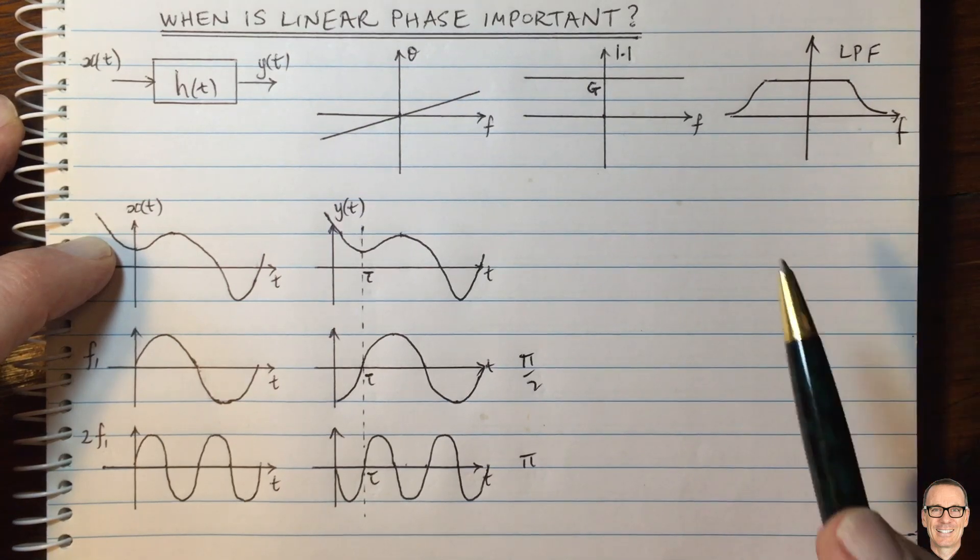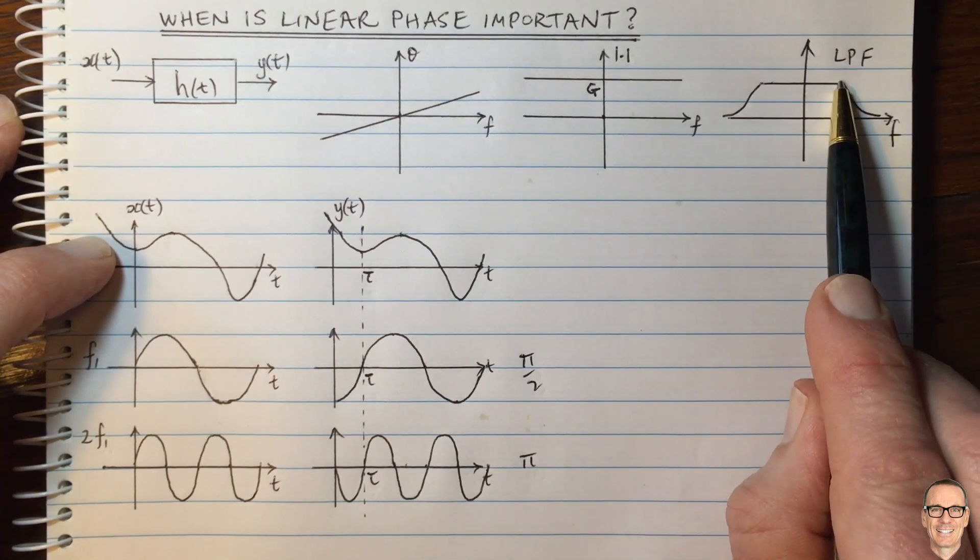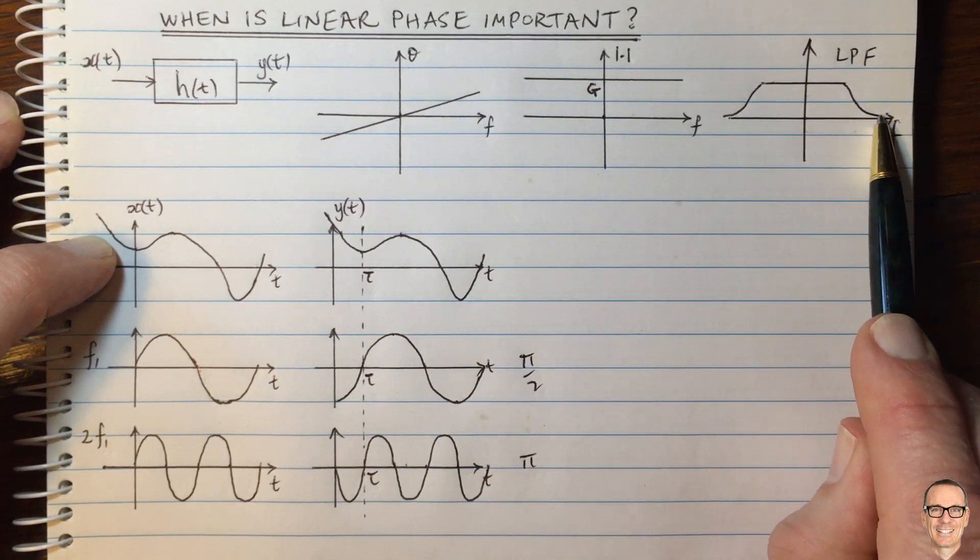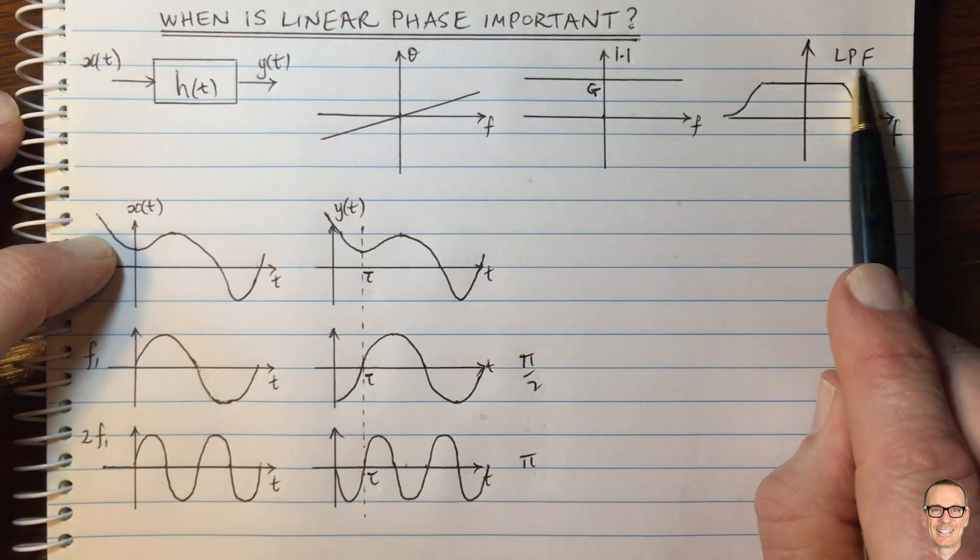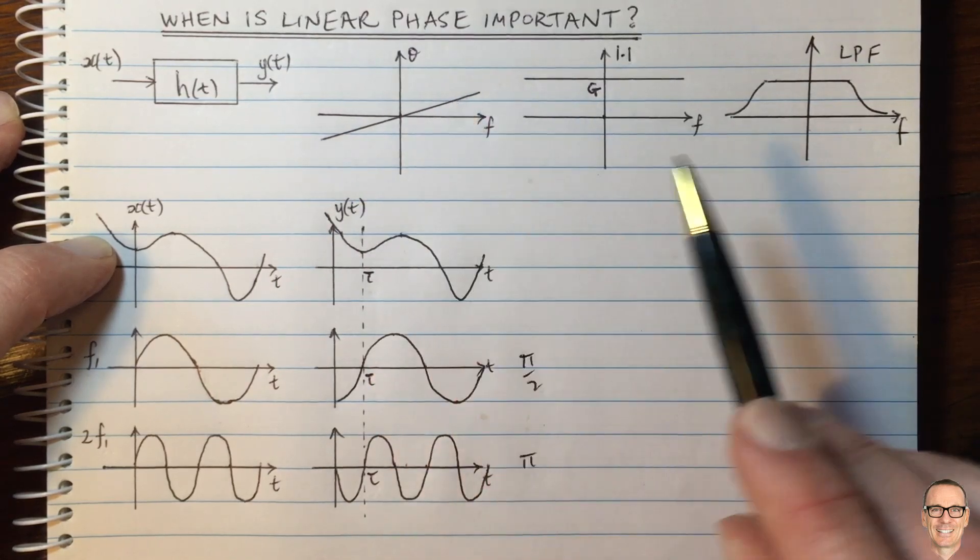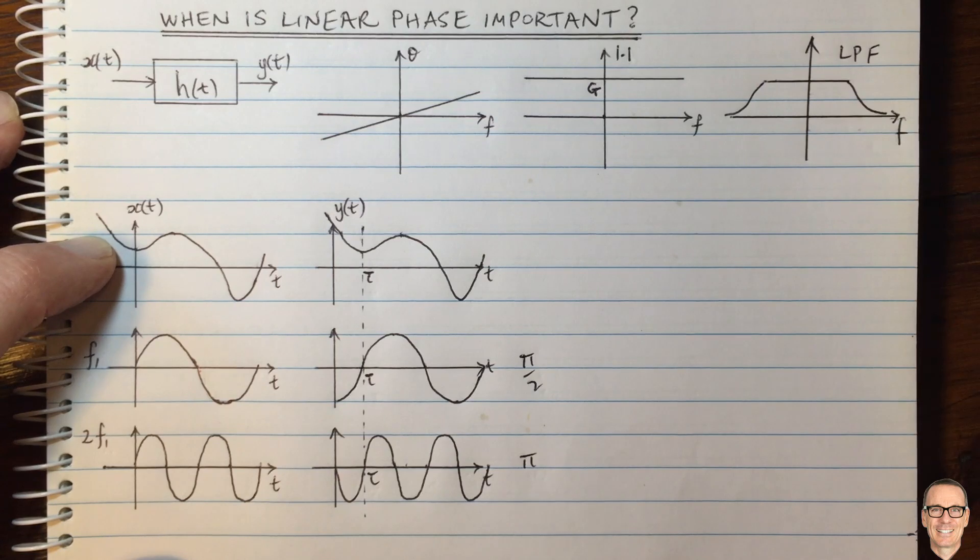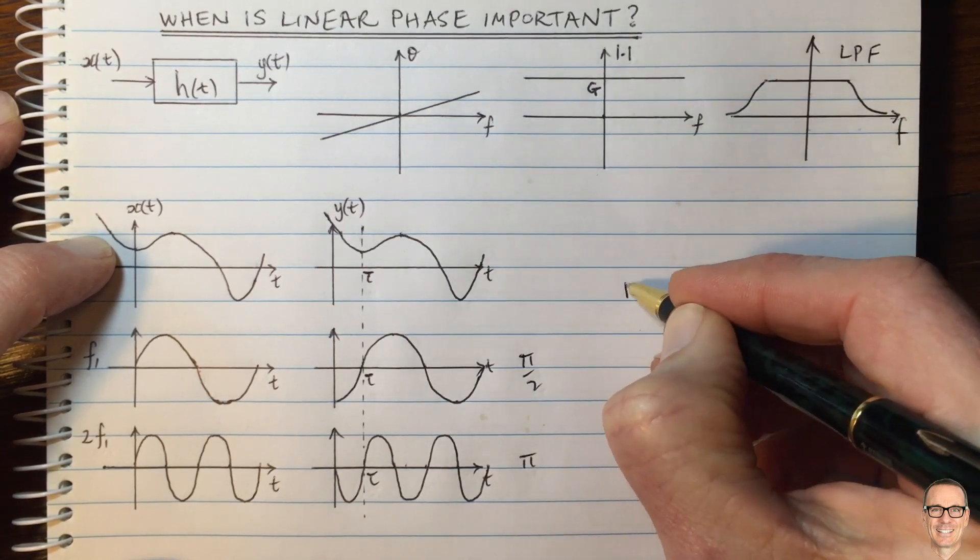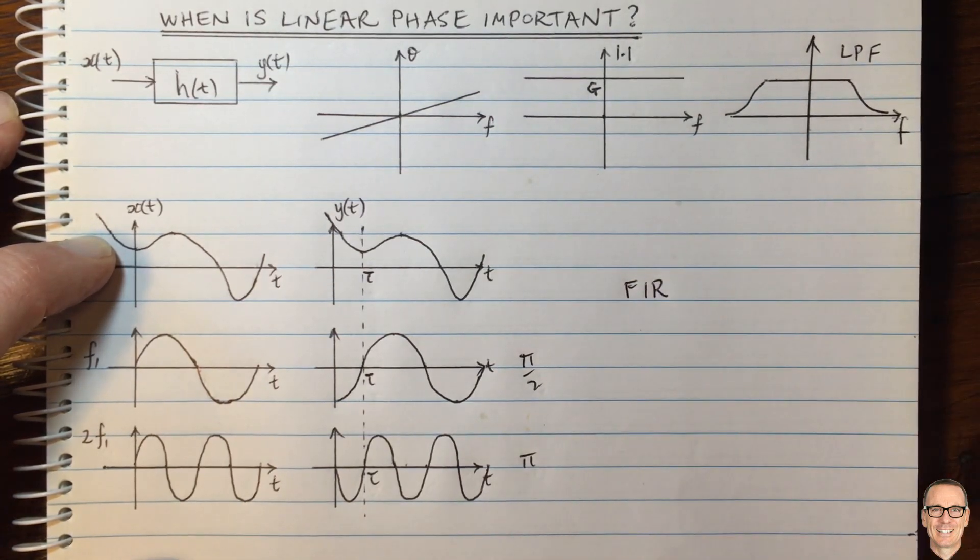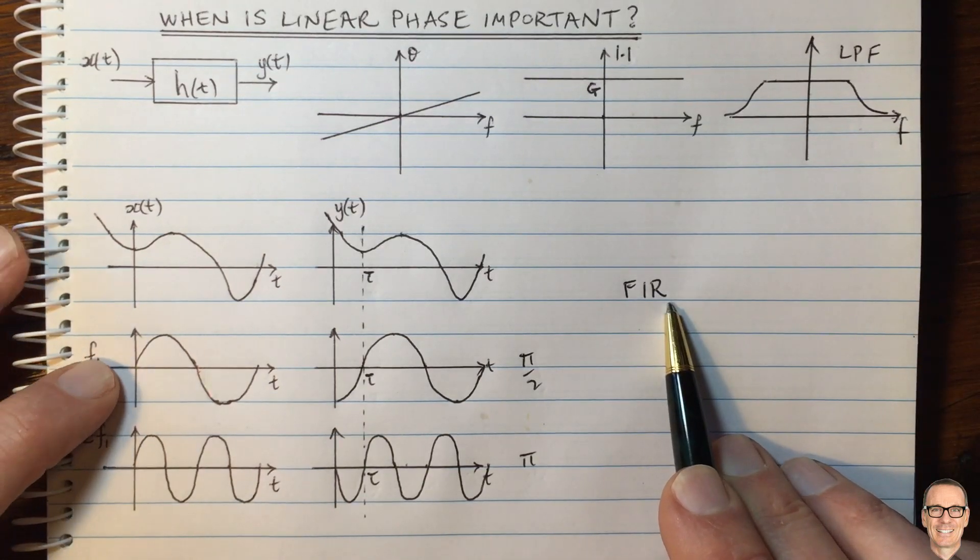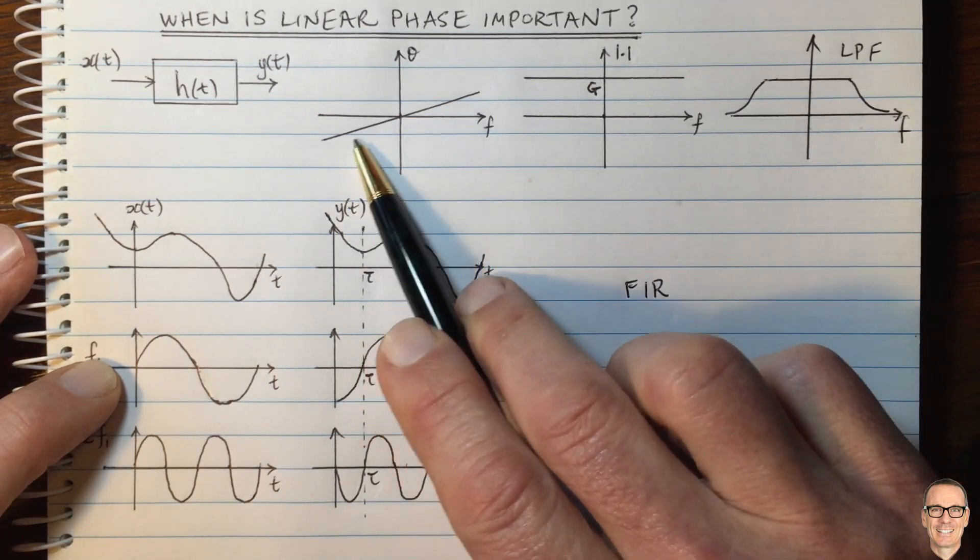So there are many different approaches to designing low-pass filters. It's not just important about the phase. You also care about the ripple and so on. And some of those approaches have very good linearity and some are not so good. In the digital domain, a finite impulse response filter, if you have symmetric taps on the finite impulse response filter, then you have a linear phase.